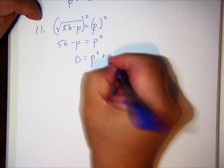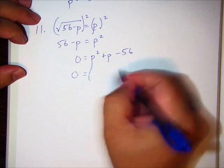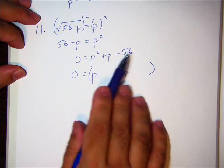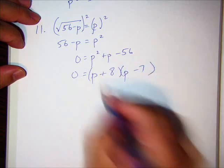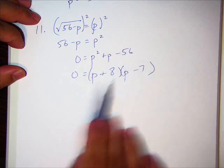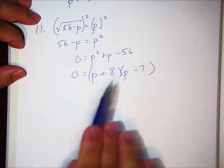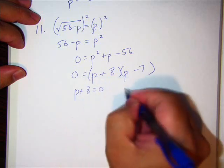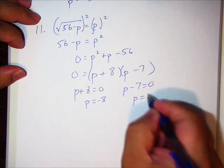So I'm going to move everything to the right. So -P becomes +P. Positive 56 becomes -56. So now it becomes a factoring problem. P squared is P and P. What are the factors of -56 that combine to make a positive one? +8 -7. The zero property of multiplication says, if two numbers multiply together, the two numbers are P + 8 and P - 7, and it equals 0, then one of them has to be 0. So we set each of them equal to 0 and then solve. So P = -8 and P = 7.